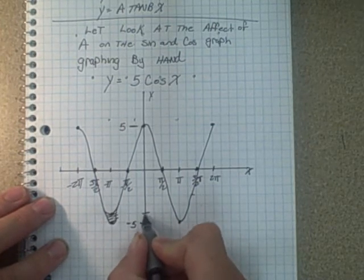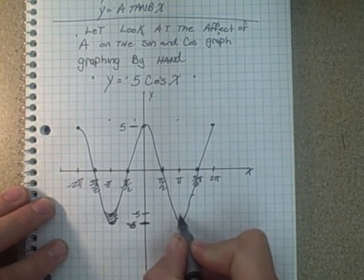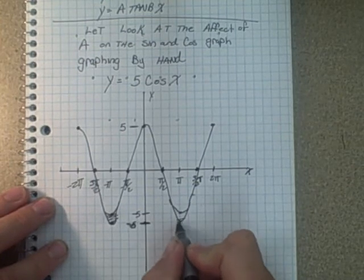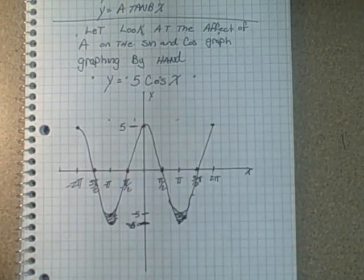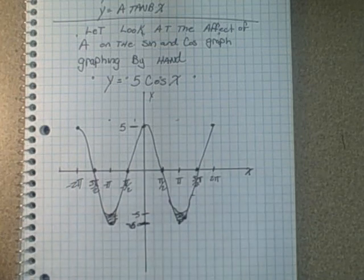So should have been like that. You got to be careful with your axis. Even if I label it there. So we can see that that would be what it would look like. This would be instead of 1 and negative 1, 5 and negative 5.